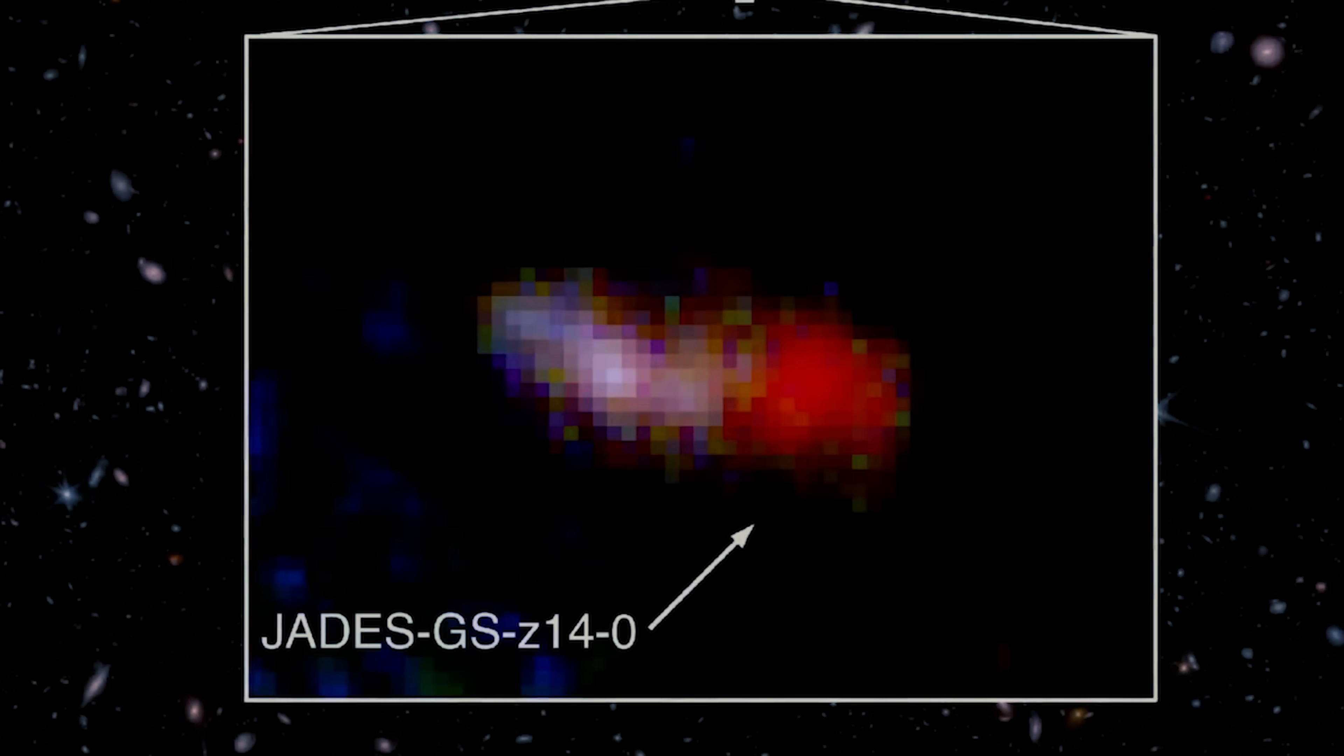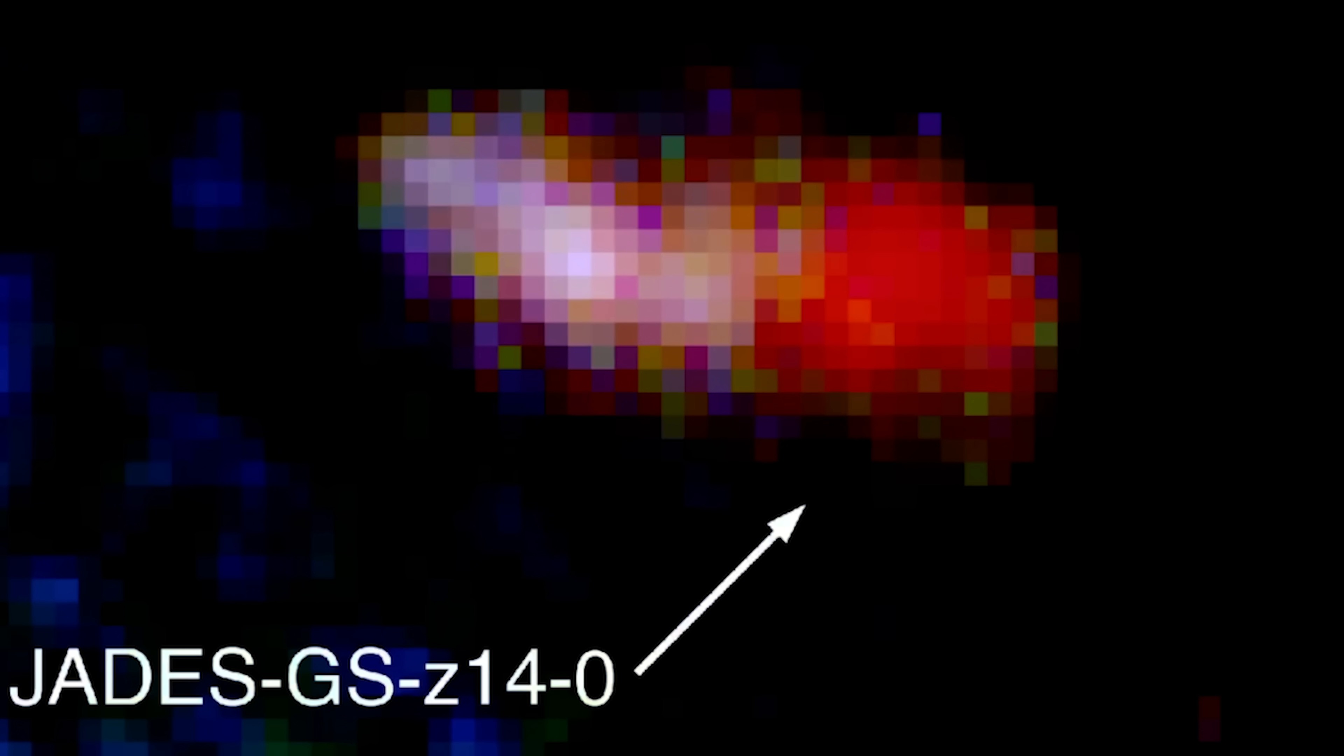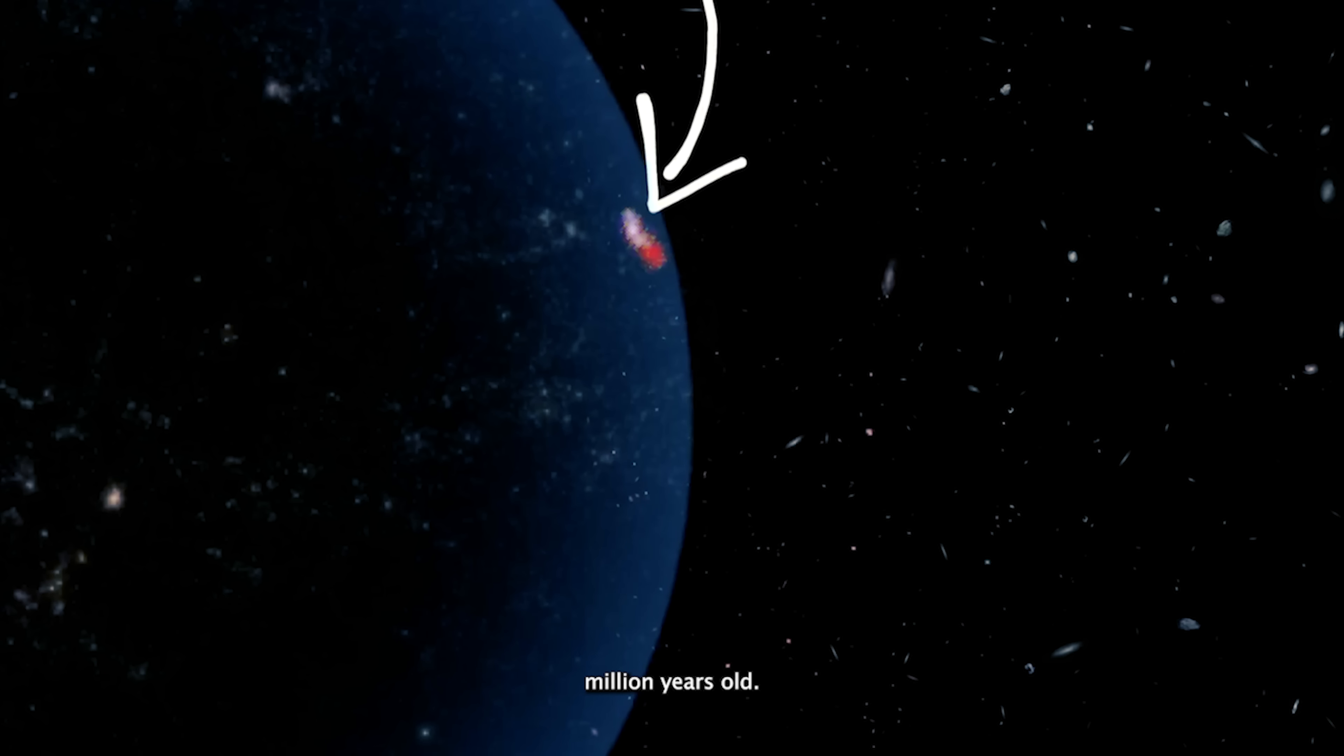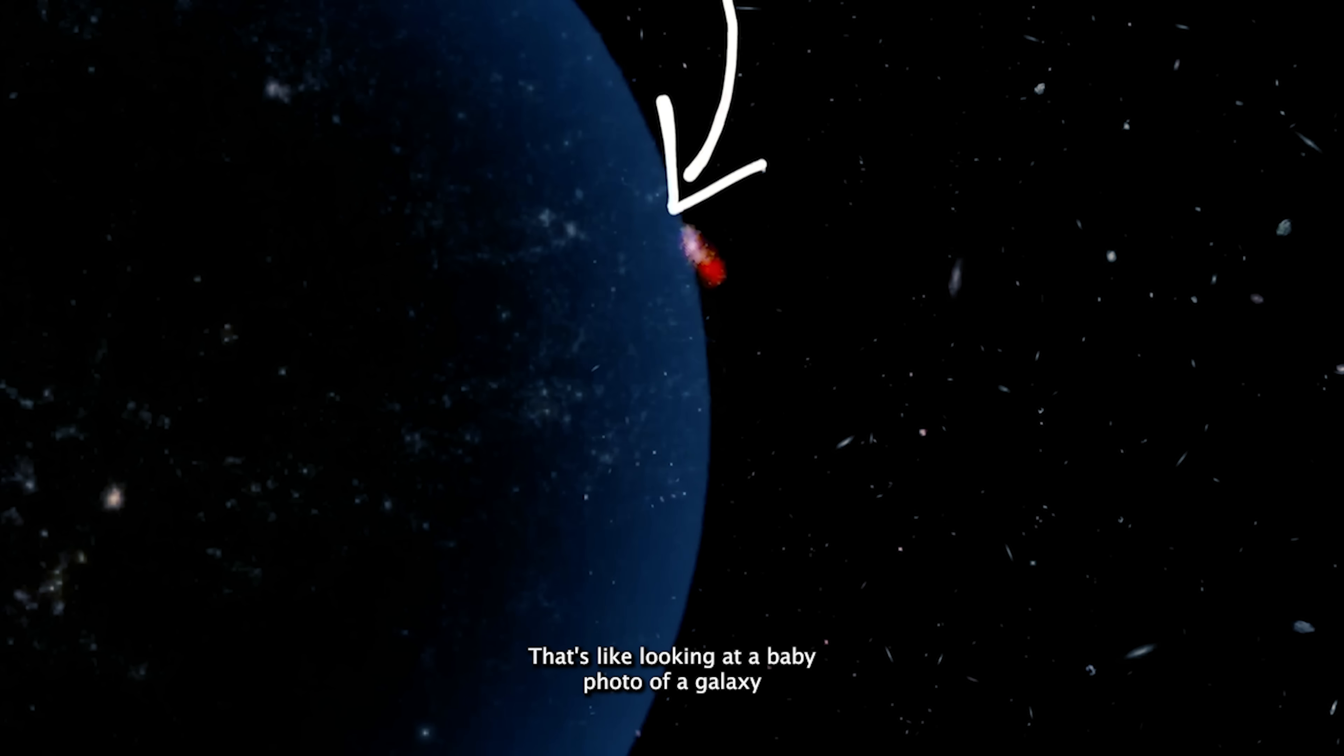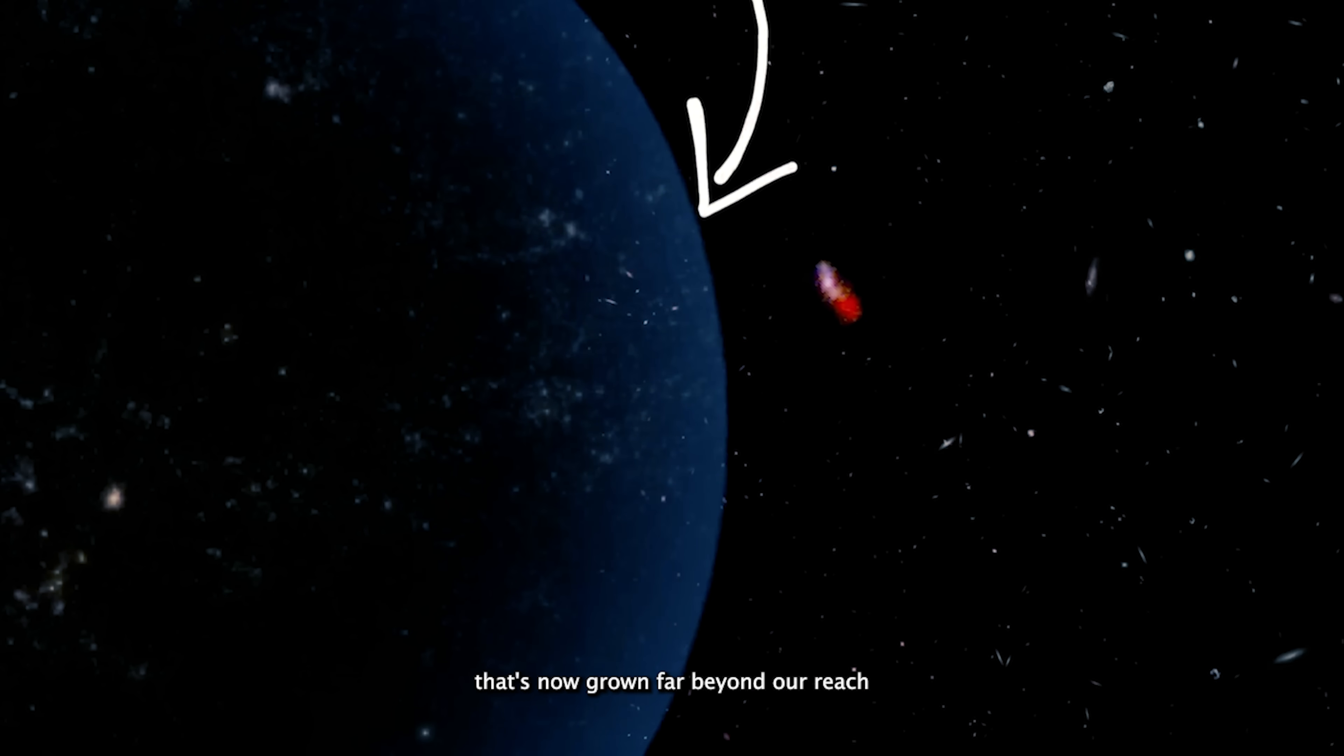Take JADES-GS-z14, the most distant galaxy ever spotted by the James Webb Space Telescope. What we're seeing is not what that galaxy looks like today. We're seeing it as it was when the universe was just 290 million years old. That's like looking at a baby photo of a galaxy that's now grown far beyond our reach.